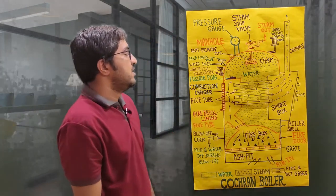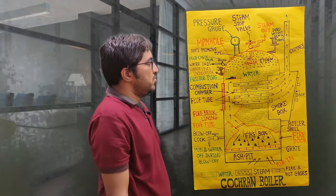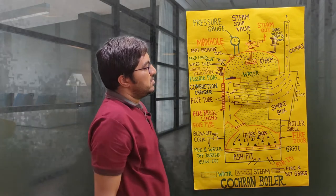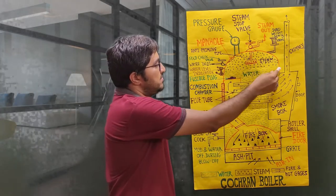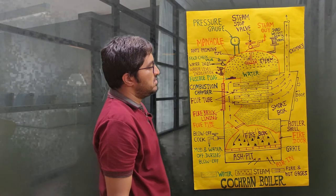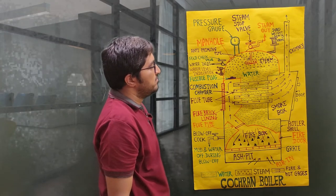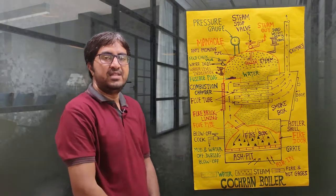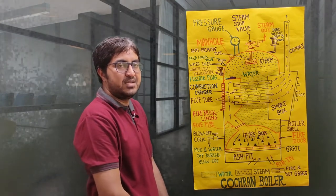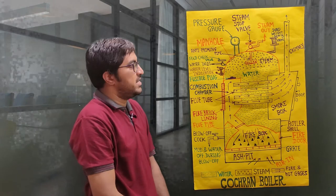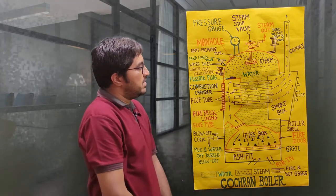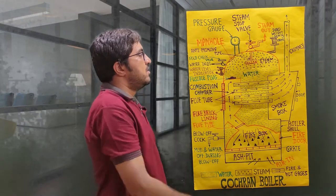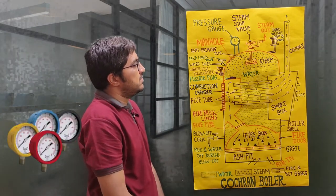The steam produced is collected on the top side of the hemispherical dome. Steam is collected at the top because the density of steam is less than water — water always remains at the bottom and steam remains at the top. A number of safety mountings are attached to the dome.